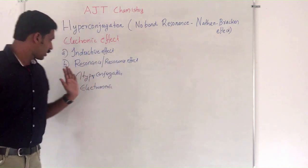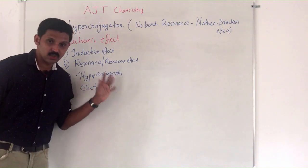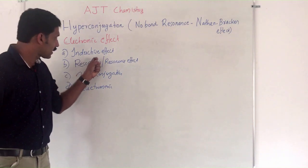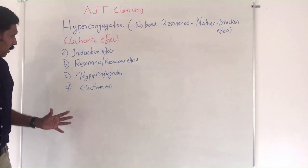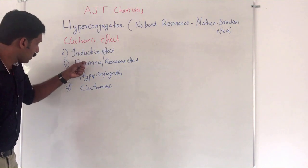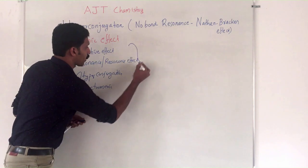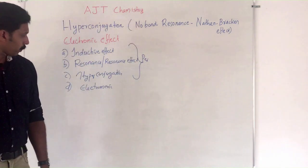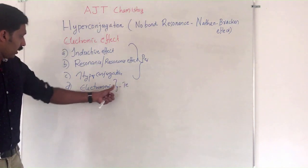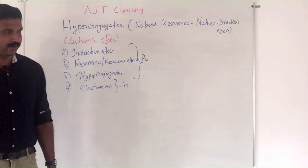I have already done some lessons on resonance and resonance effect. Today I am going to discuss about hyper conjugation. The important point is that inductive, resonance, and hyper conjugation are all permanent effects, whereas the electromeric effect is a temporary effect. I will give a separate lesson on the electromeric effect in the future.